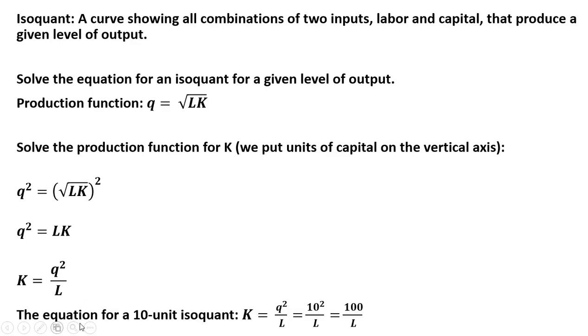For example, the equation for a 10-unit isoquant, we're just going to plug in 10 for q, and we get K equals 100 divided by L. So you could give me any value of L, get the corresponding value for K, and you have one point on the isoquant. For example, if L is 2, K is 50, and that'd be one way of producing 10 units of output.